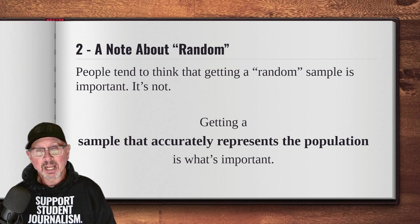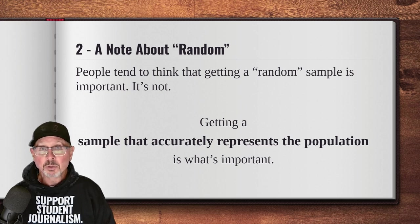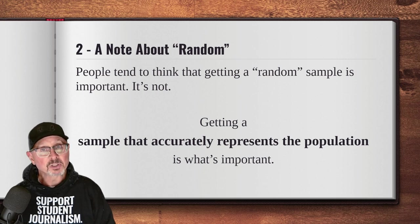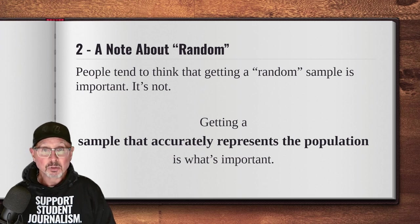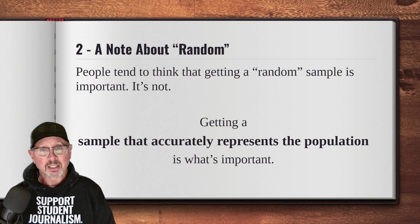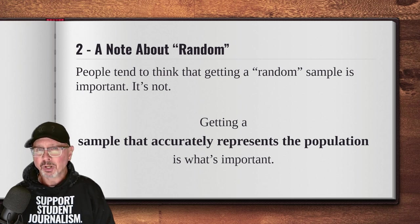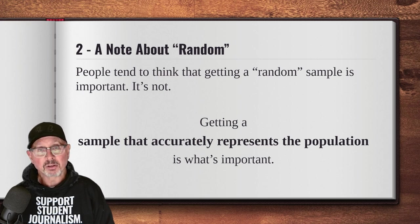People think that getting a so-called random sample is important, but it's counterintuitive — it's not what matters most. What is important is that the sample data accurately represents the population you're looking at. The reason people think random is good is that they feel random equals unbiased, and that's a mistake. For example, if you stand at the front door of the school as students come in and randomly ask people to fill out a brief survey, you're inviting a lot of bias. Only people who take the time to do the survey will be in the data — that's a response bias problem. And you're only getting people who come to school early. What about people who are always late or have a job in the mornings?